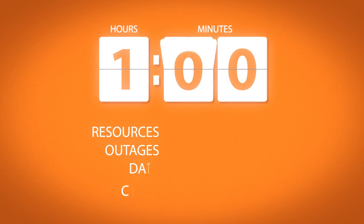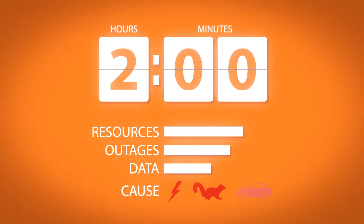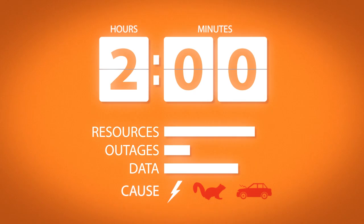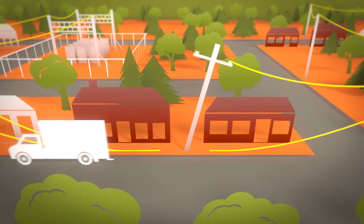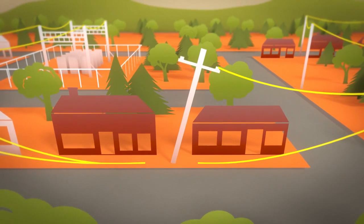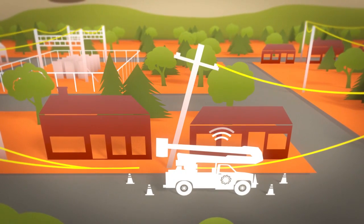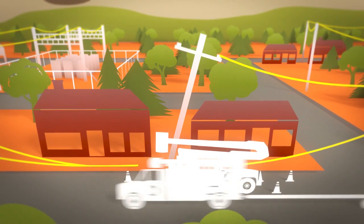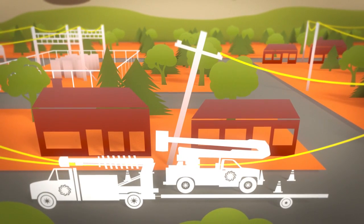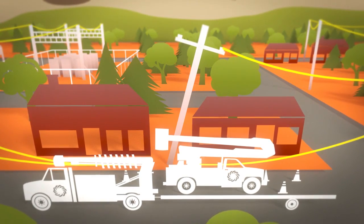The estimated time of restoration, or ETR, is determined based on resources needed, other ongoing outages, and historical data. The ETR can change once crews arrive on site. For example, if utility poles are significantly damaged, conditions are unsafe, or other unexpected factors exist, field crews may require more time and additional resources. We always attempt to keep ETRs as accurate as possible.